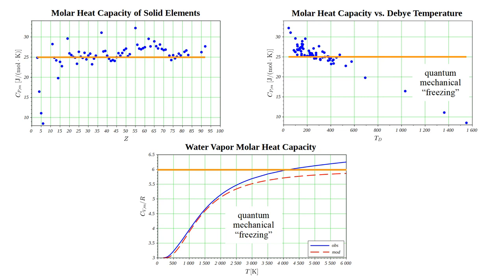So, quantum mechanical freezing explains heat capacity below the classical prediction. But we also observe values above the classical prediction. How do we explain this?